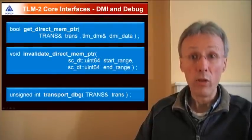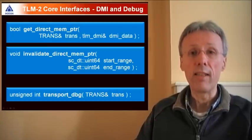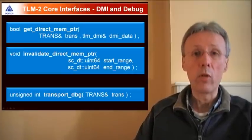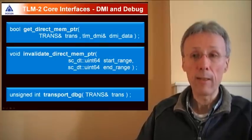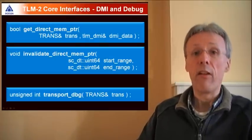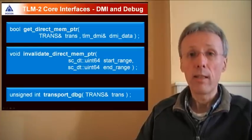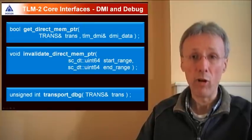The final method calls belong to the DMI and the debug interfaces. DMI interface is the direct memory interface. The getDirectMemoryPointer method, which is called on the forward path, requests a direct memory pointer from a target. The invalidateDirectMemoryPointer, which is called on the backward path, invalidates the DMI region that's previously been accessed and granted.